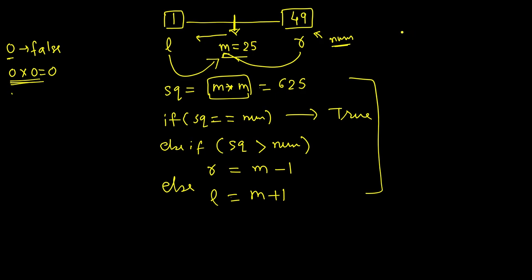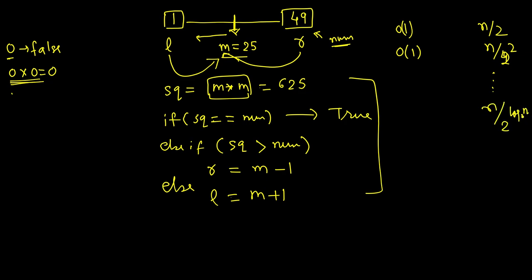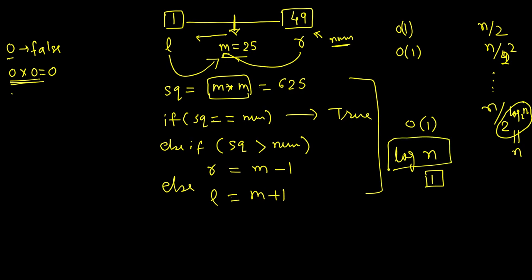In the first step we take the mid in O(1) time and our range becomes n/2, since we look in either the left or right part. After the next step it halves again to n/4, and after log n steps the range reduces to 1. At that point, the number's square is either equal to num or not, so the overall time is O(log n).